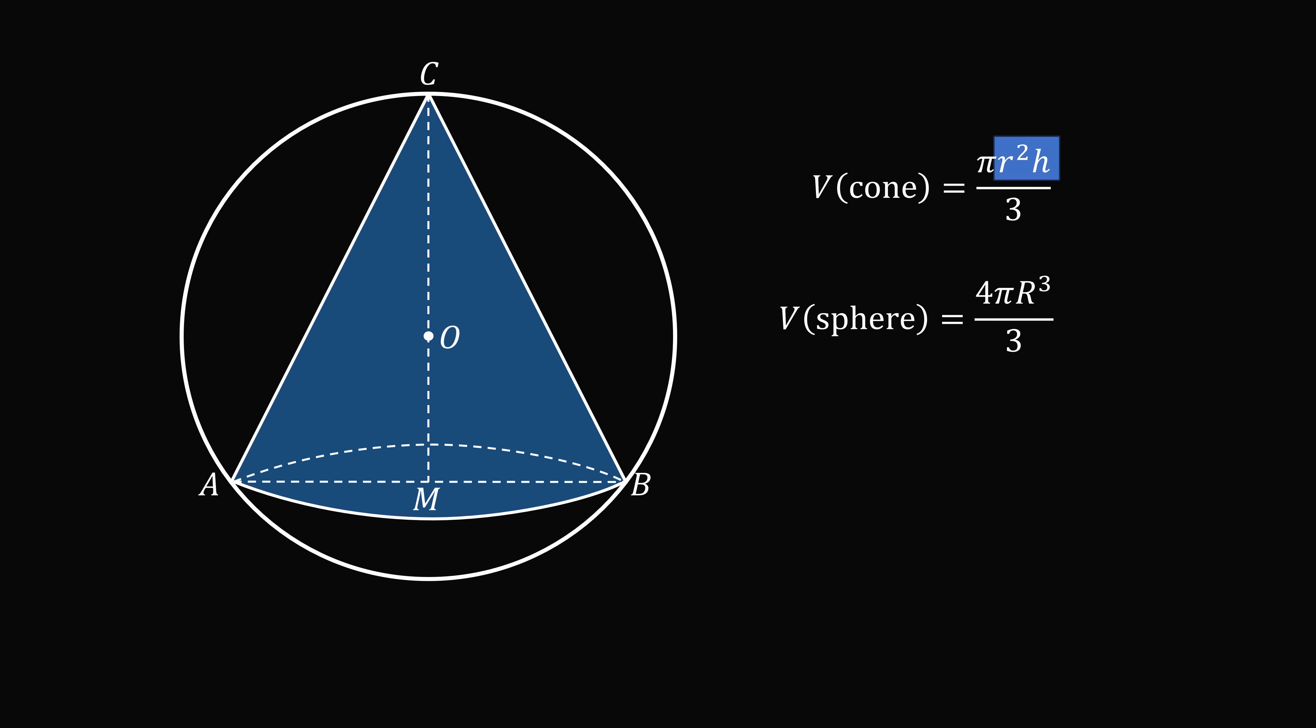So we ideally want to get the radius and the height of the cone in terms of the radius of the sphere. So we'd want r to be equal to some constant times the radius of the sphere, and h to also be equal to some constant times the radius of the sphere. So let's see how we can work this out.